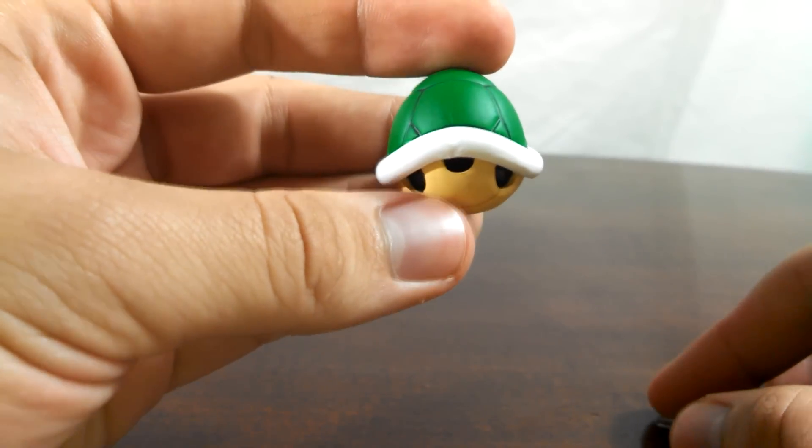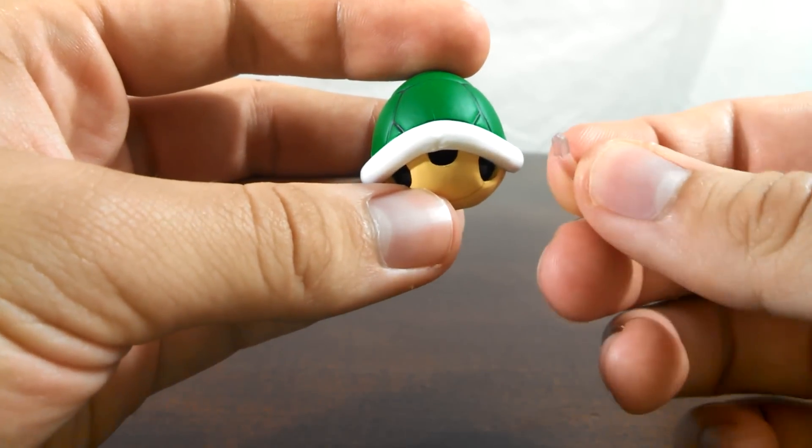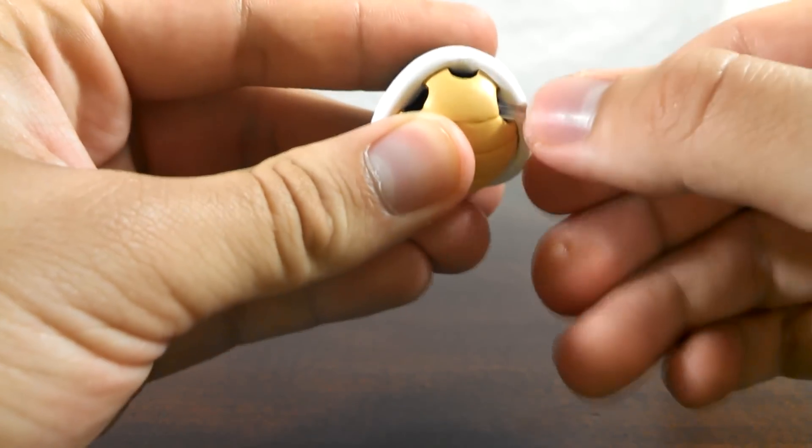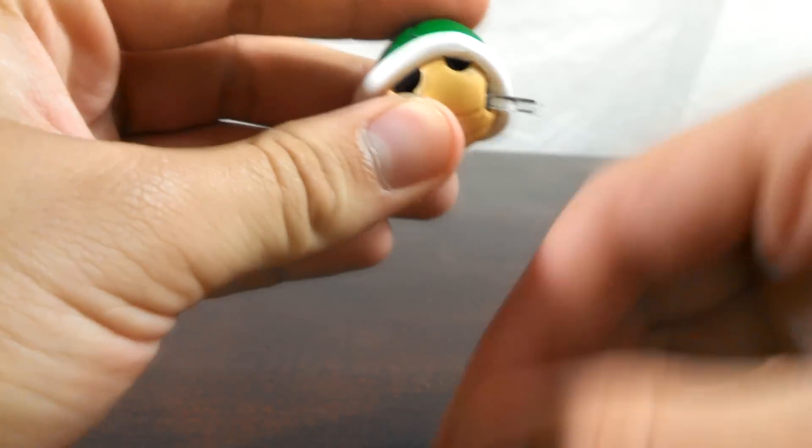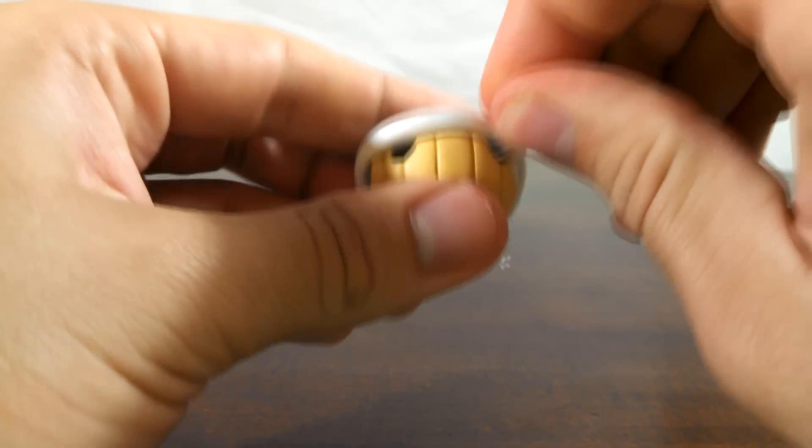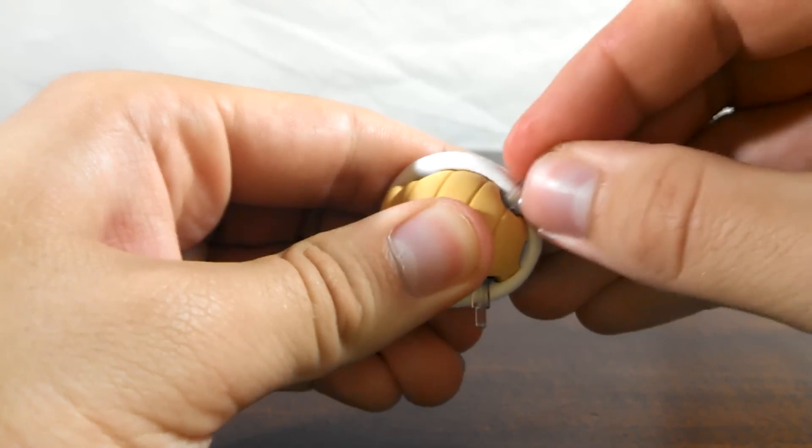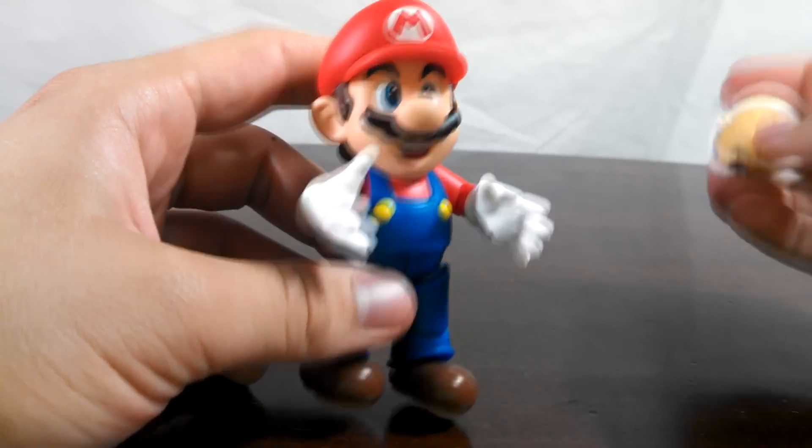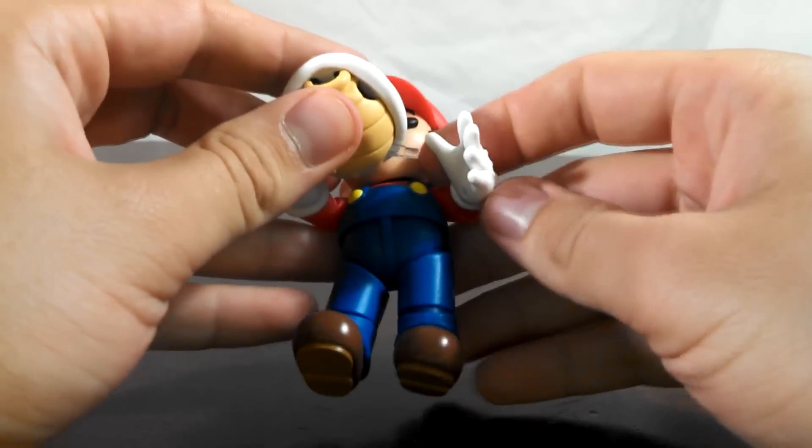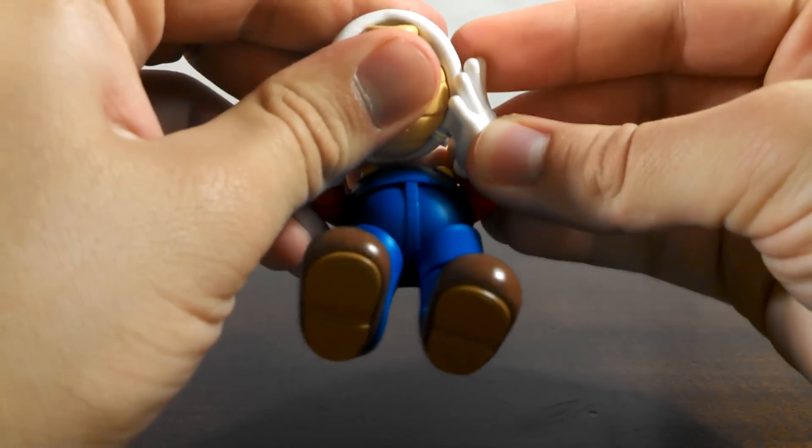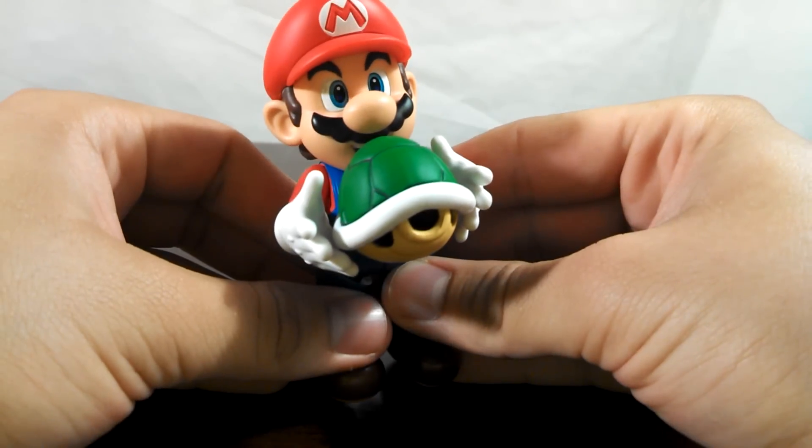If you want Mario to hold the shell like this, you're going to have to use the angled parts. So take the longer end and just plug it in. Like so. And then from there, all you have to do is just plug the Koopa shell into Mario's hands. Like so. Easy enough.